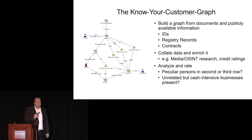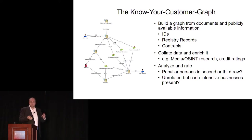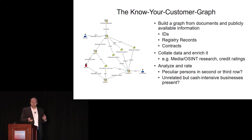Let's take a look how this works in a more real-life example. What we do is usually build a graph. We take information received as part of the due diligence process, and we also use publicly available information — IDs, registry records, rental contracts. We analyze it, looking at who are the actors: the companies, the people, the locations. We collate that data, enrich it with media reports and open source intelligence, and build a graph.